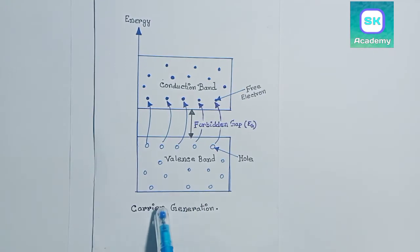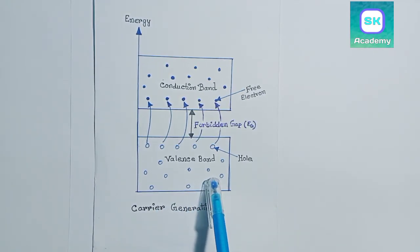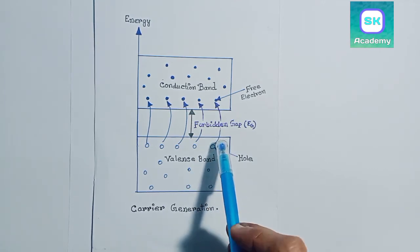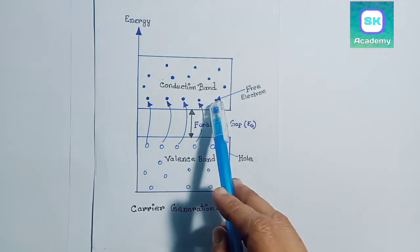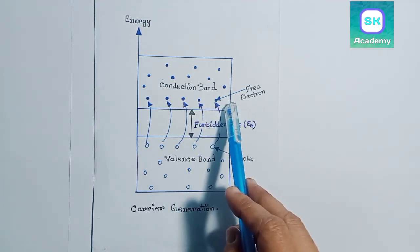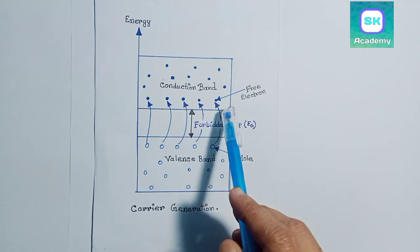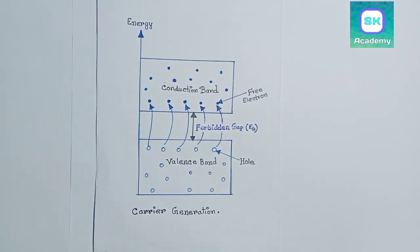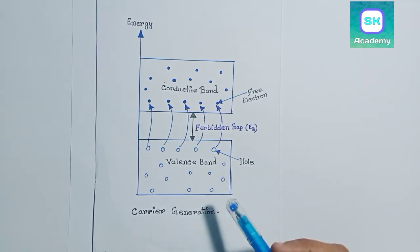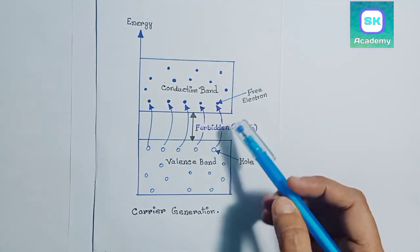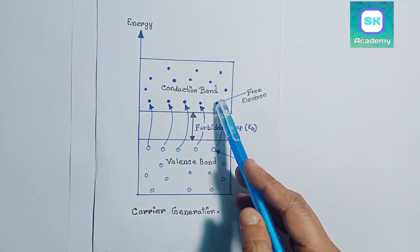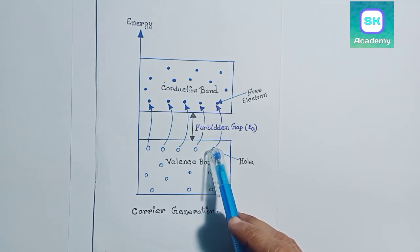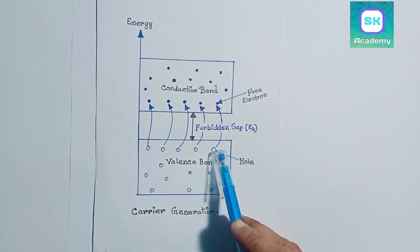Carrier generation is the process by which an electron gains energy and jumps from the valence band to the conduction band, producing two mobile carriers, i.e. free electron and hole. When an electron jumps from the valence band to the conduction band in a semiconductor, a vacancy is created in the valence band. This vacancy is called a hole.